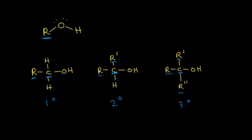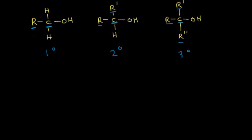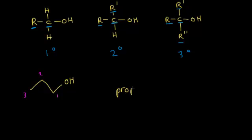Let's look at the nomenclature of alcohols, starting with simple molecules. For a molecule where I want to use IUPAC nomenclature, I number my carbon chain to give the OH the lowest number possible. So carbon 1 is here, carbon 2 next, and carbon 3 after that. Without the OH, we'd have a three-carbon alkane called propane. But since we have the OH, this is an alcohol with the -ol ending, so it's called propanol. The OH is on carbon 1, so the full name is 1-propanol.